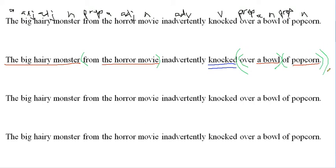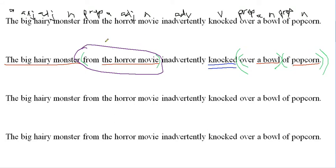It's kind of a concept that you probably haven't talked about before, but we'll build on that as we go. Now let's go ahead and identify the adjective phrases. We're looking at 'from the horror movie' — it's talking about the monster, and monster is a noun. So that helps us out with that decision. We circle this and label it adjective phrase.